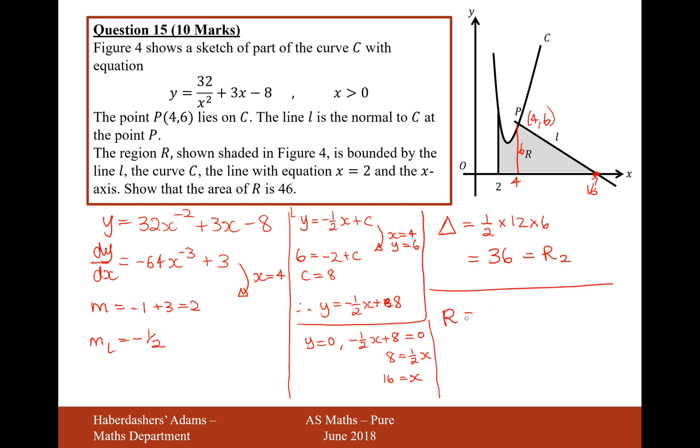So the total for R is 10 plus 36 equals 46. And there we are, that's the answer to this question.